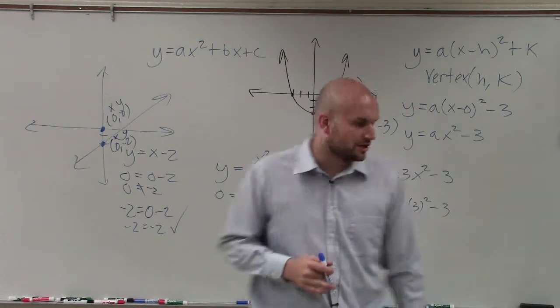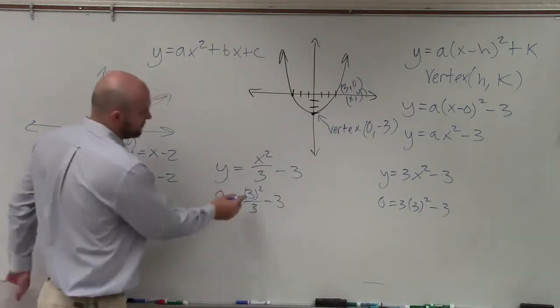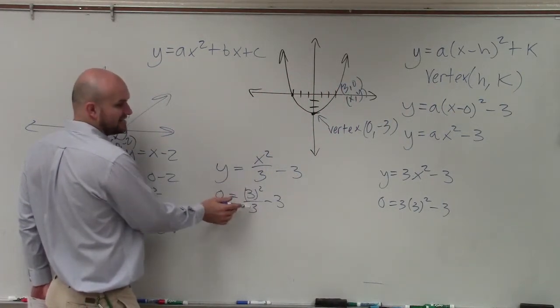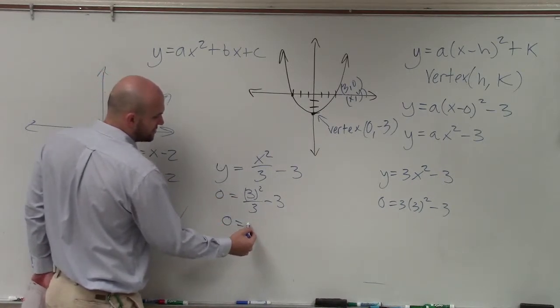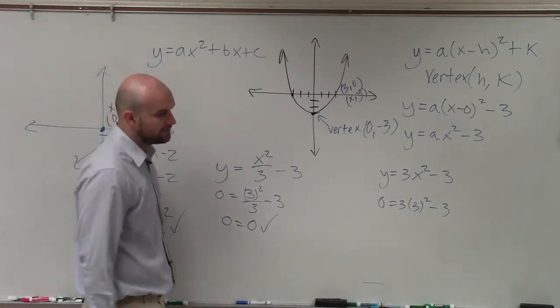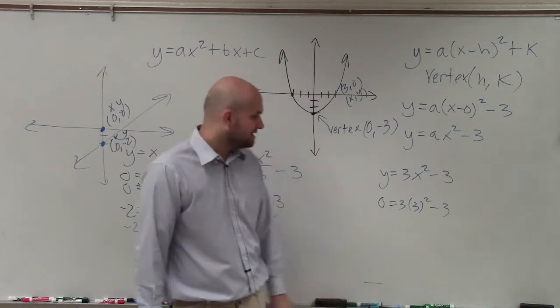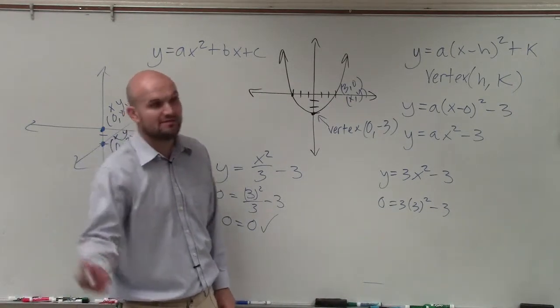So now all I simply need to do is just simplify. 3 squared is going to be 9. 9 divided by 3 is 3. 3 minus 3 is equal to 0. Here, 3 squared is 9. 9 times 3 is 27. 27 minus 3 is 24.